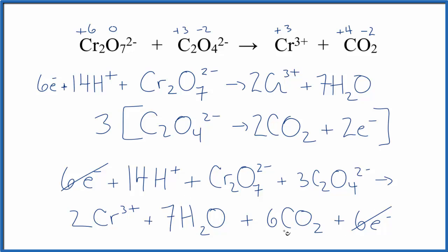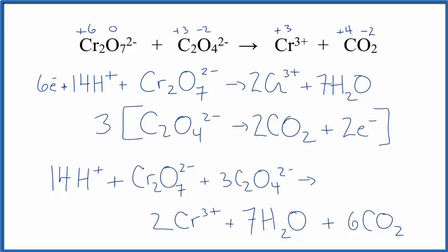So this is our balanced redox reaction for the dichromate ion plus the oxalate ion. Let me clean this up real quick. And there you have it. This is Dr. B with the balanced redox reaction for Cr₂O₇²⁻ + C₂O₄²⁻. Thanks for watching.